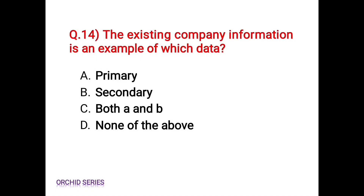Question 14: the existing company information is an example of which data? Options are: primary, secondary, both A and B, none of the above. The correct answer is Option B, secondary. The existing company information is an example of secondary data.